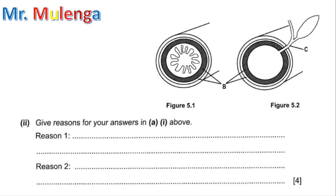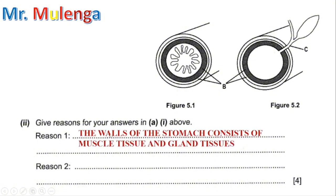We now move on to question A2, which reads: Give reasons for your answers in A1 above. They want us to give reasons why Figure 5.1 was taken from the stomach and Figure 5.2 from the duodenum. The reason that Figure 5.1 was taken from the stomach is because we can see the muscle tissues and the gland tissues present. The walls of the stomach consist of muscle tissues and gland tissues.